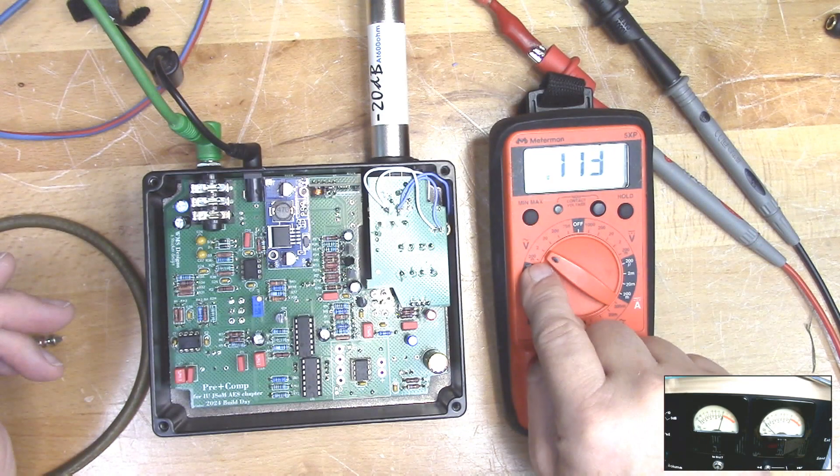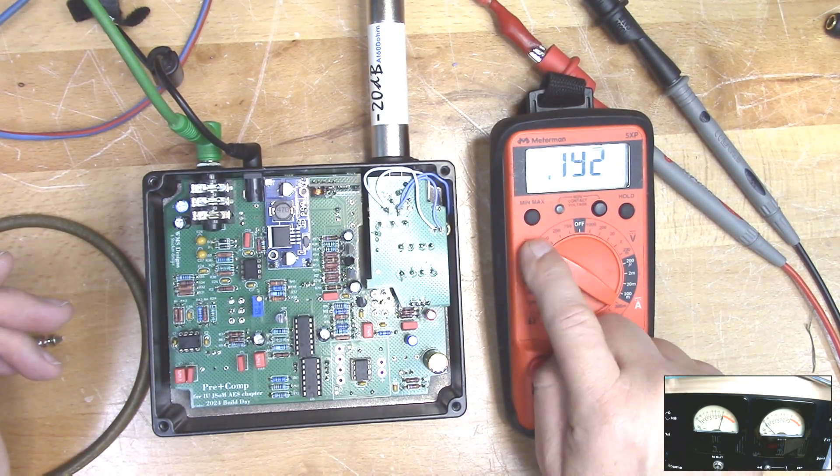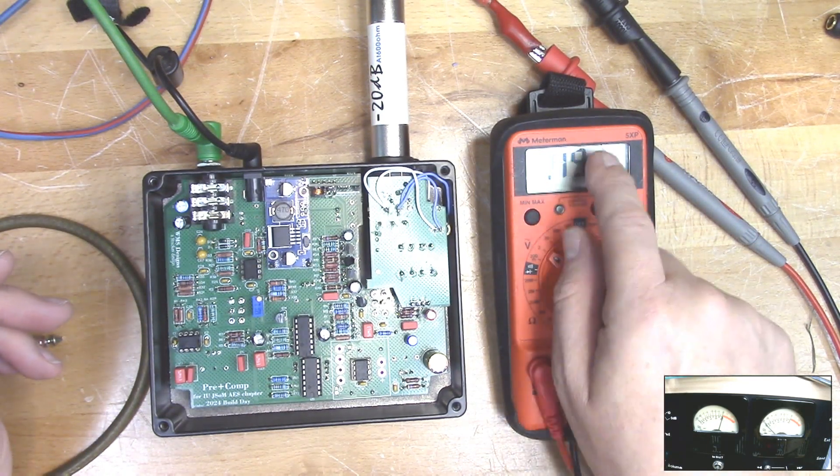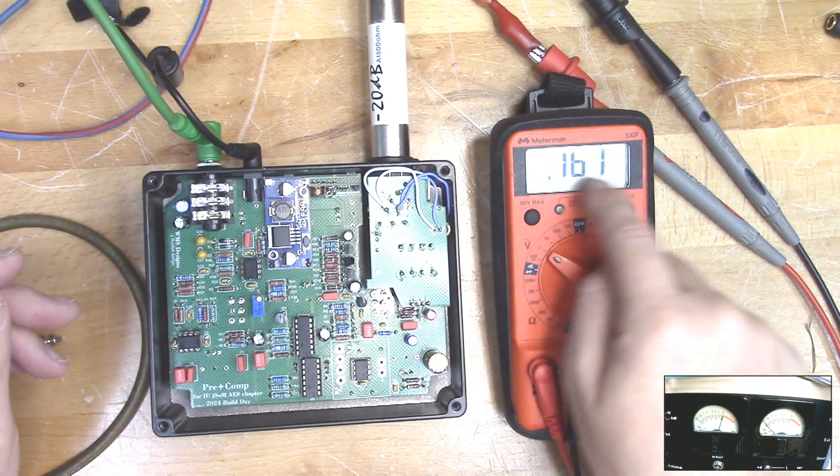So again, AC voltmeter will give you an RMS value. This doesn't really have any signal going to it right now, which is why it's kind of bouncing around.